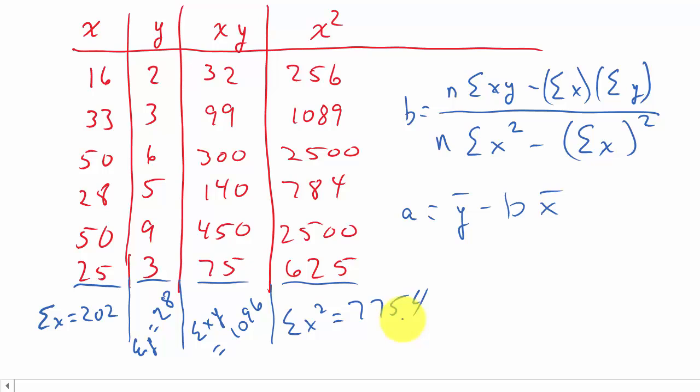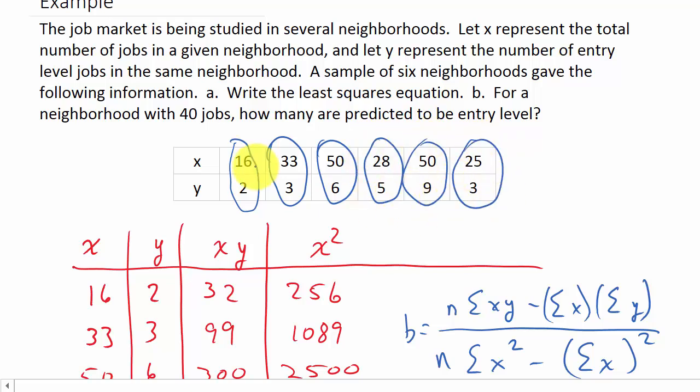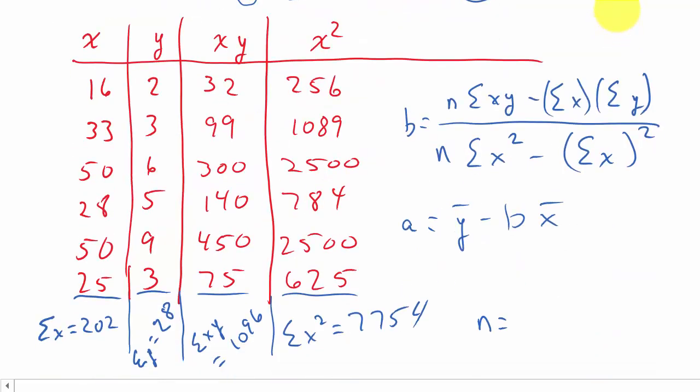We need n also. That's the number of data points. So n is 1, 2, 3, 4, 5, 6—that's 6 data points. N is not 12. You don't count each number, it's how many pairs. There's 6, so n equals 6.